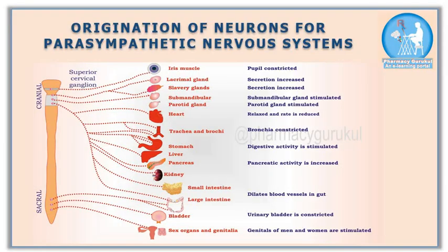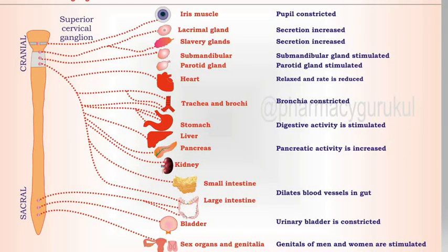Origination of parasympathetic nerves. Parasympathetic nerves originate from the cranial region — C3, C7, C9, and C10 — as well as from the sacral region, and that's why they are also called craniosacral outflow.